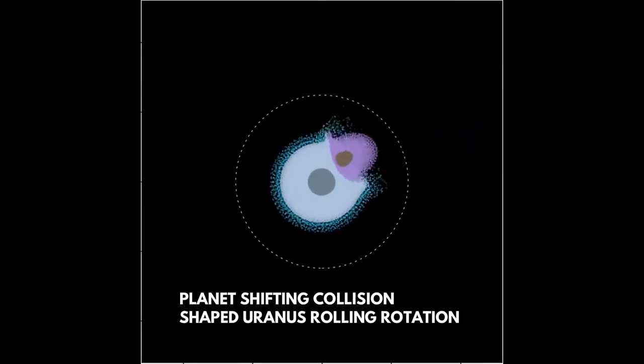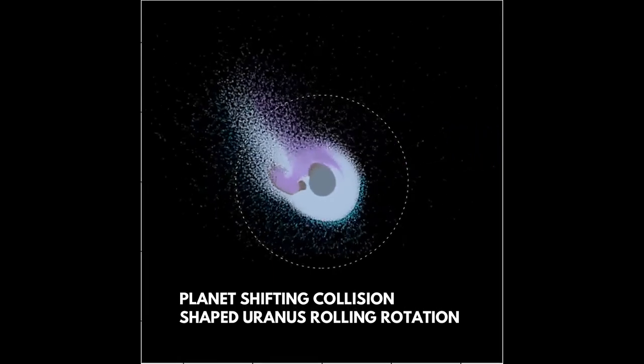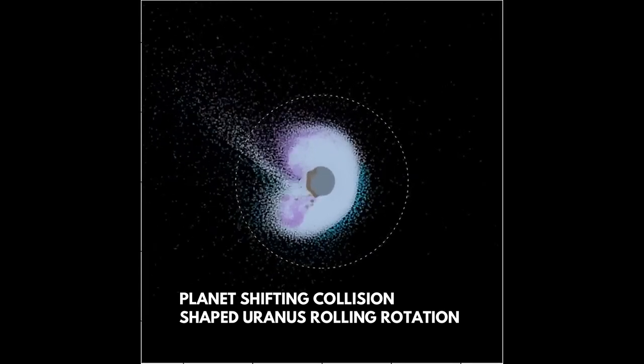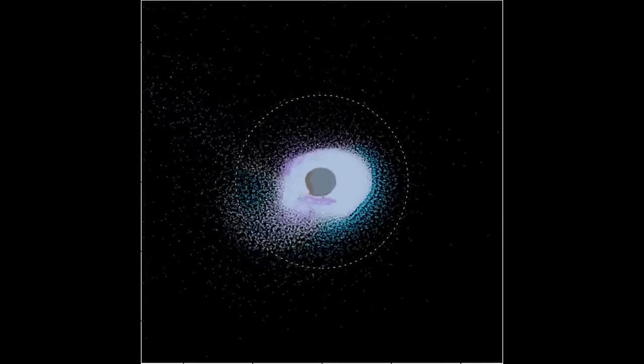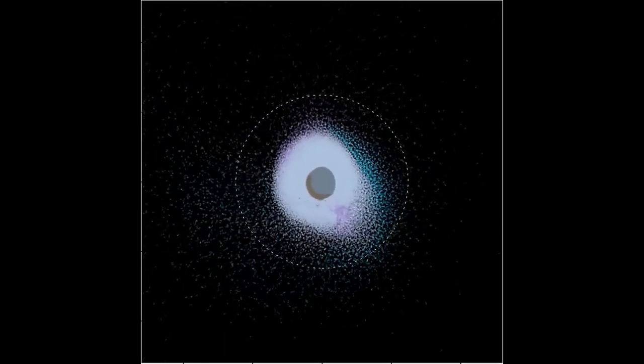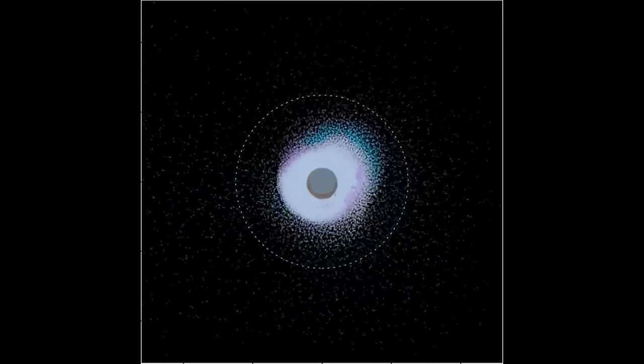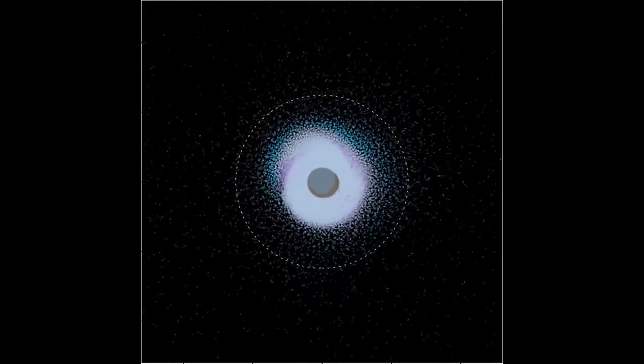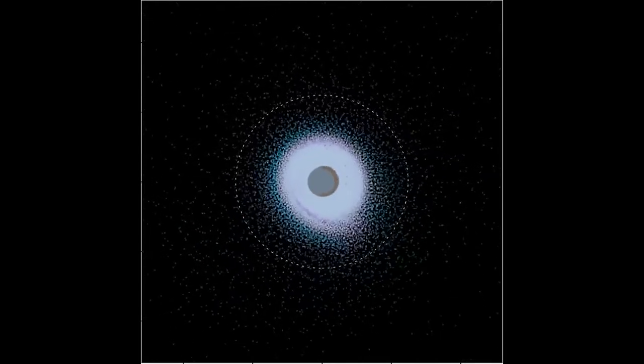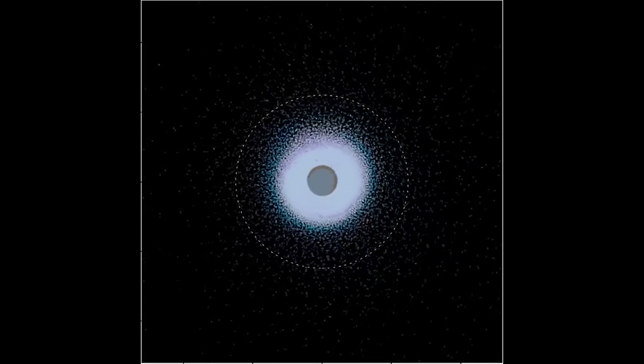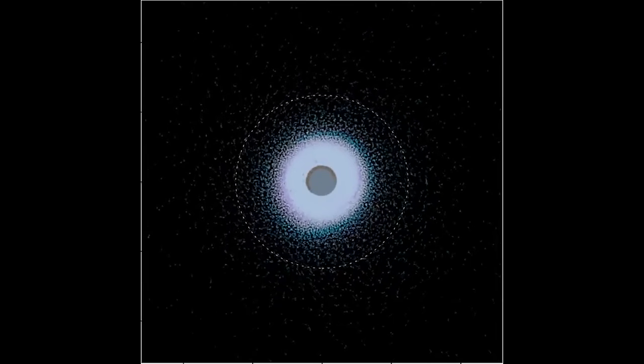A simulation of the most likely Uranus impact scenario that caused today's tilted orbit. According to new, highly detailed simulations, light gray represents ice materials from Uranus, while dark gray represents rock materials from Uranus. Purple represents ice materials from the impactor, while brown represents rock from the impactor. Light blue represents Uranus's atmosphere.